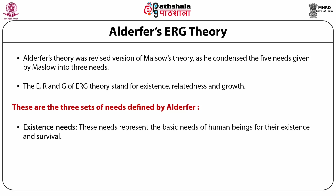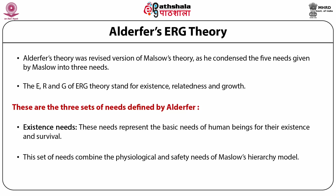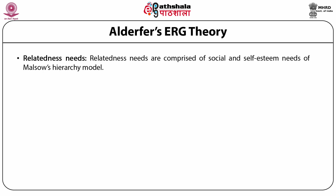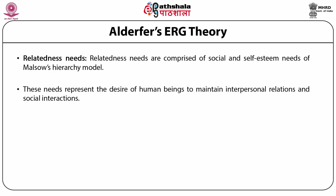Existence needs represent the basic needs of human beings for their existence and survival. This set of needs combines the physiological and safety needs of Maslow's hierarchy. The second category, relatedness needs, comprises the social and self-esteem needs of Maslow's hierarchy model. These needs represent the desire of human beings to maintain interpersonal relationships and social interactions.